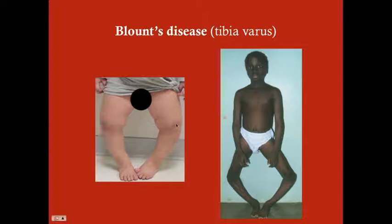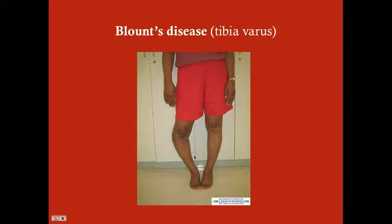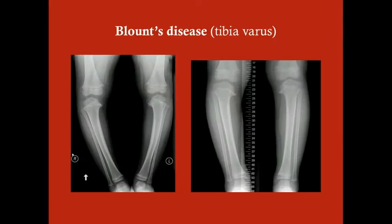Here's Blount's disease in a slightly more obese child with bilateral tibia varum. You can see internal rotation of the foot, which happens because of the tibial discrepancies. Here's a unilateral case and another with significant internal rotation. The x-ray shows a unilateral case on the right and a bilateral case on the left.